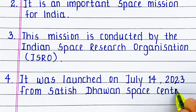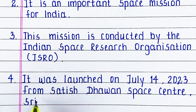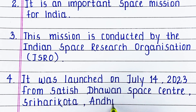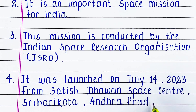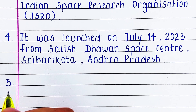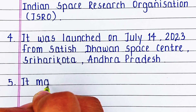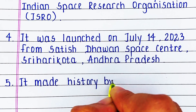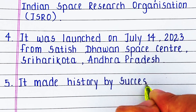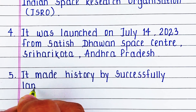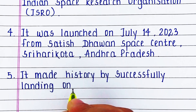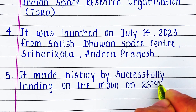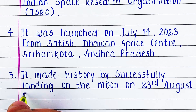Fourth line is: It was launched on July 14, 2023 from Satish Dhawan Space Center in Shriharikota, Andhra Pradesh. Fifth line is: It made history by successfully landing on the moon on 23rd August, 2023.